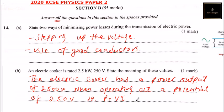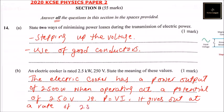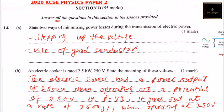So it gives out energy at a rate of 2500 joules per second when operating at 250 volts. That is how you answer that question.